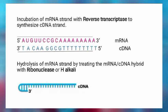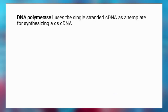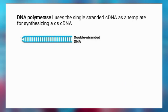After degrading the mRNA strand, we are left with only a single-stranded cDNA strand. Due to the hydrophobicity of the single-stranded cDNA, the 3' end undergoes formation of a hairpin loop. The cDNA strand is then incubated with DNA polymerase I, which uses the single-stranded cDNA as a template for synthesizing a double-stranded cDNA.